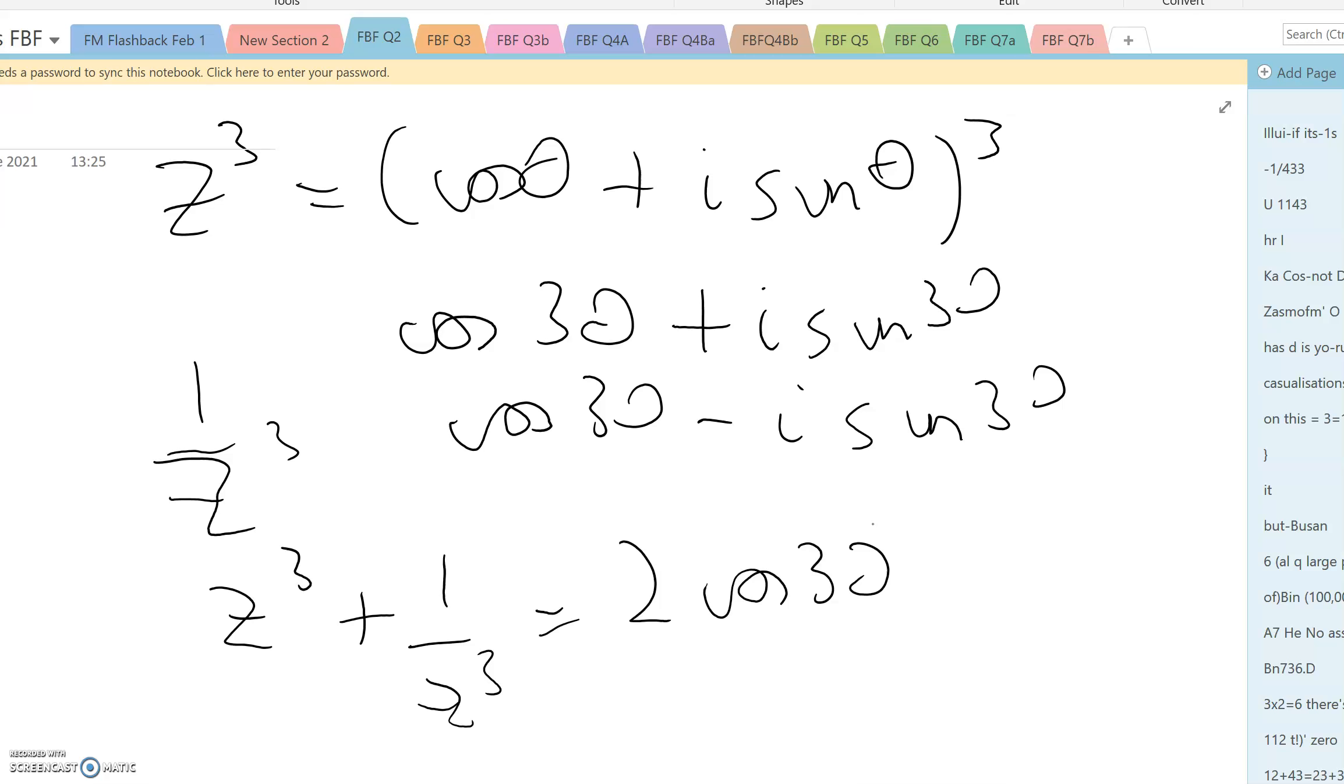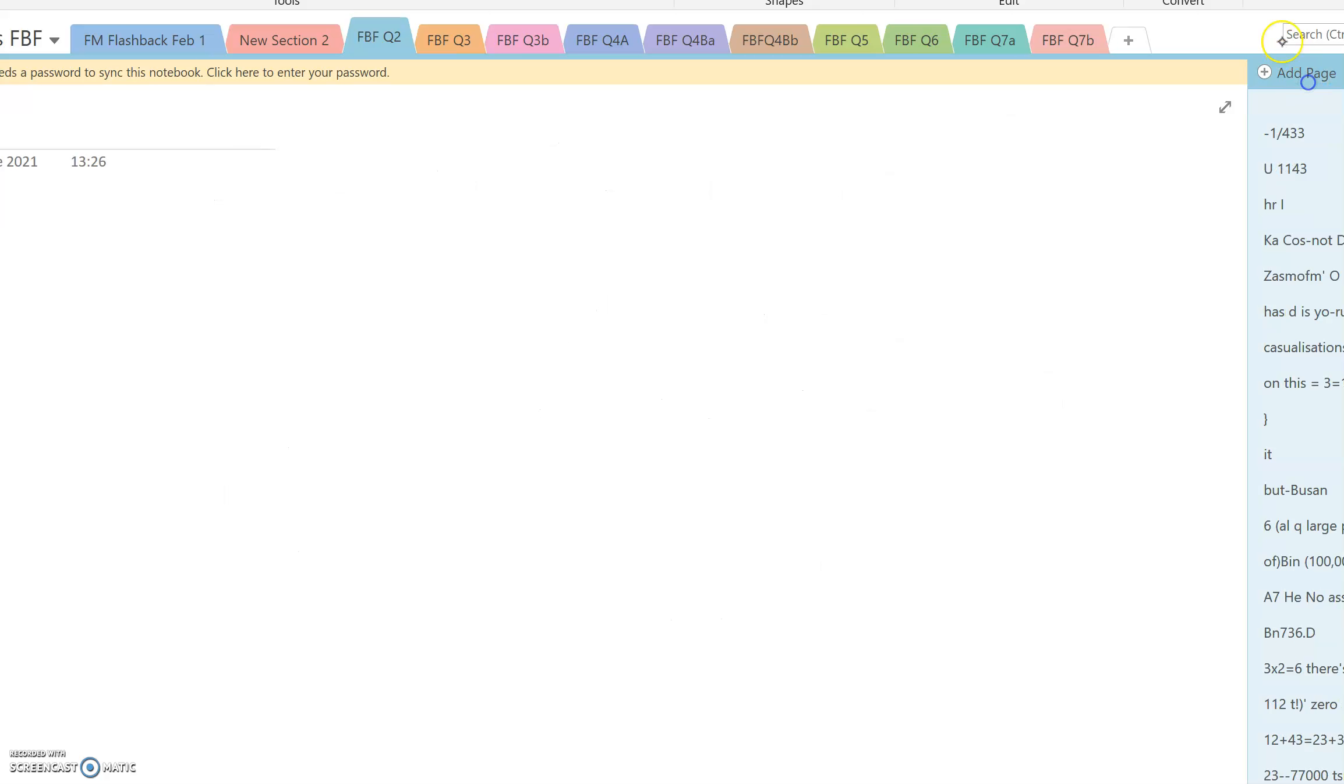If we go back to the complete binomial expansion, that means that z cubed plus 1 over z cubed plus 3z plus 1 over z is equal to 2 cos 3 theta plus 3 cos theta.